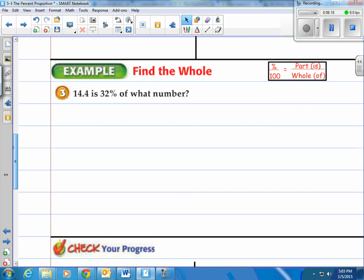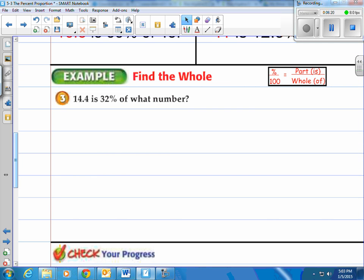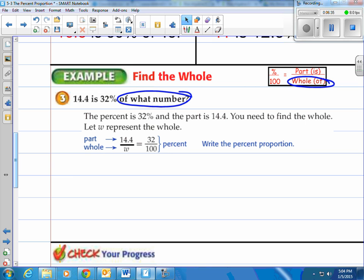Last type of problem they can give you is finding the whole, if that's missing. Here's what it looks like, 14.4 is 32% of what number. You can see the of what number is the piece that's missing. So we're looking for that bottom piece right there. Well, to solve this problem, the percent is 32% and the part is 14.4, you need to find the whole. So let W represent the whole, that's what they're using in the book here, so they'll say the whole is going to be W right here.